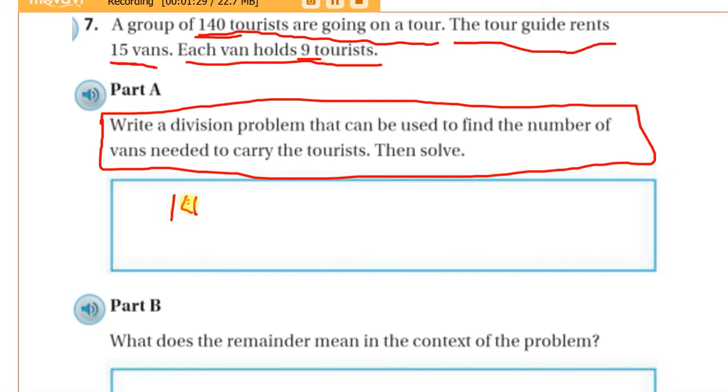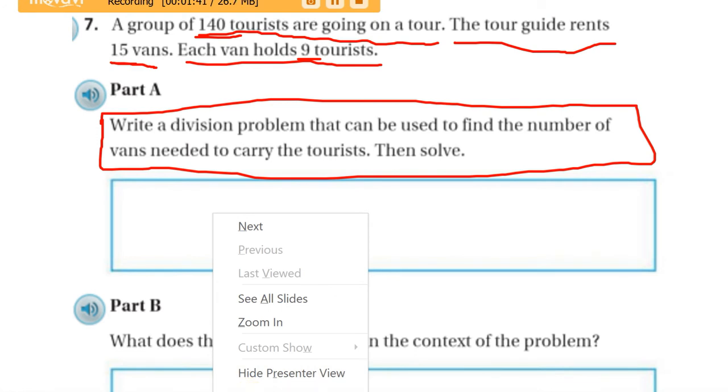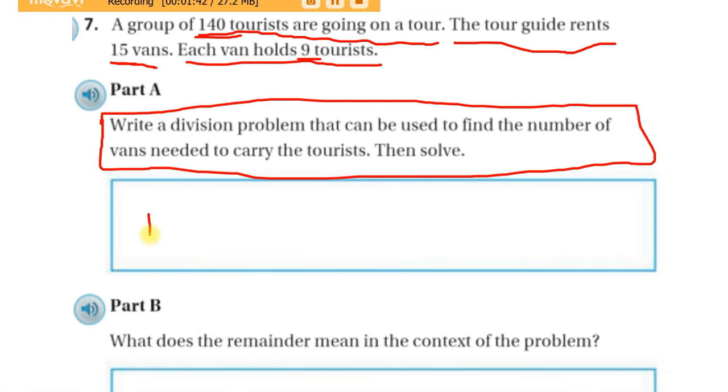So, 140, that is supposed to be a 4, bear with me. You know what, let me erase that. Because that's particularly bad. Alright. So, 140, divided by the number of people per van, which would be 9, equals.